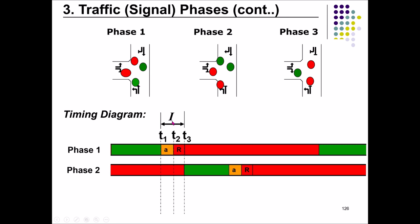Intergreen, denoted I, is the period in between two consecutive green phases — from the end of one green to the beginning of the next green. The formula is: intergreen equals amber plus R (all-red period). During the all-red period, phase one is red and phase two is also red — all phases show red simultaneously. That is why it is called all-red. Then only phase two will turn to green.